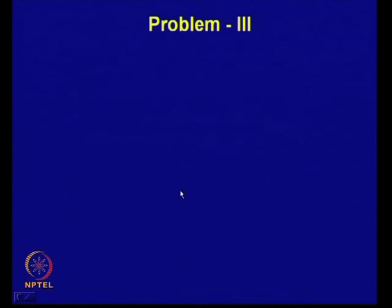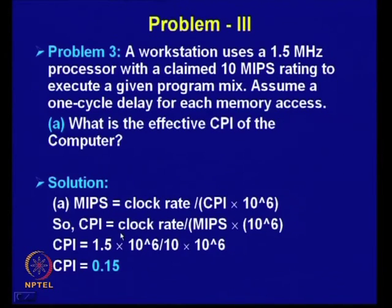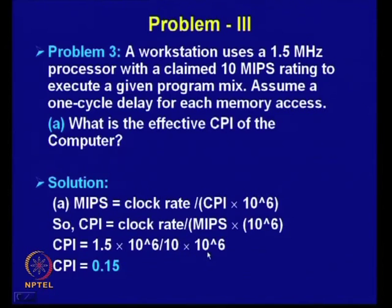Problem 3: a workstation uses a 1.5 MHz processor with a claimed MIPS rating of 10 MIPS to execute a given program mix, assuming a one-cycle delay for each memory access. What is the effective CPI of the processor? MIPS = clock_rate / (CPI × 10^6), so CPI = clock_rate / (MIPS × 10^6). Substituting: CPI = 1.5×10^6 / (10×10^6) = 0.15.